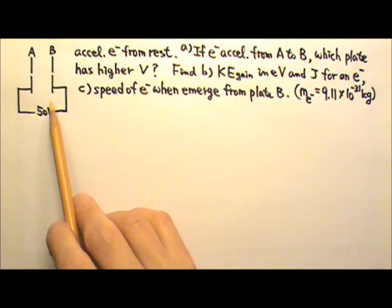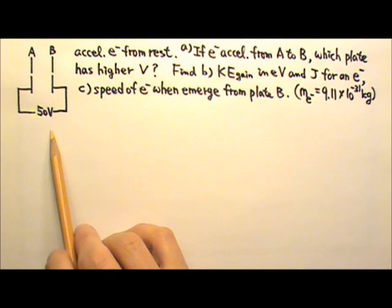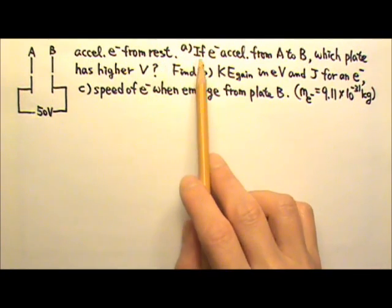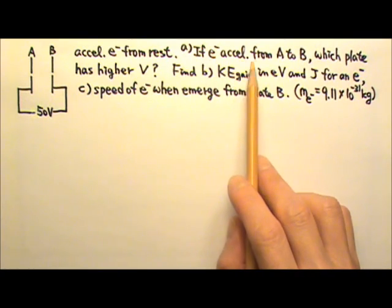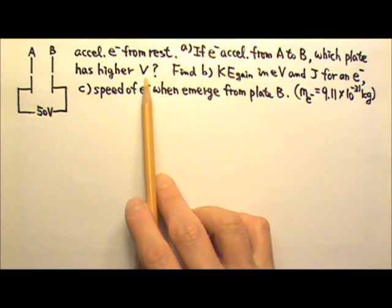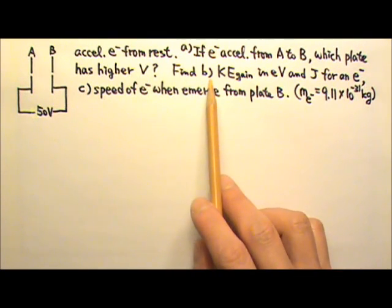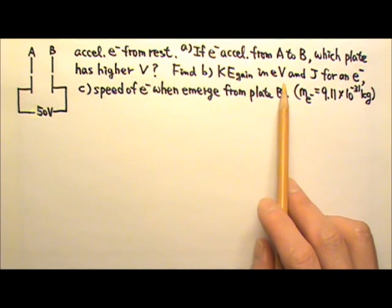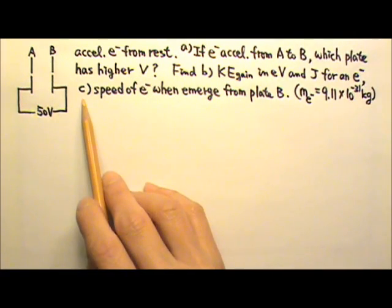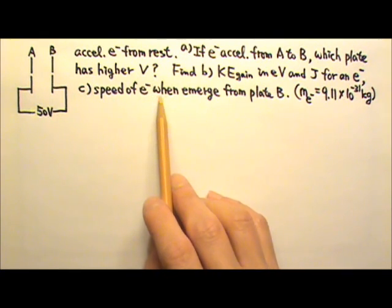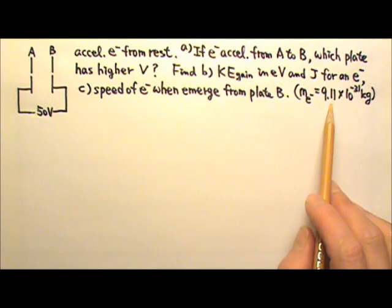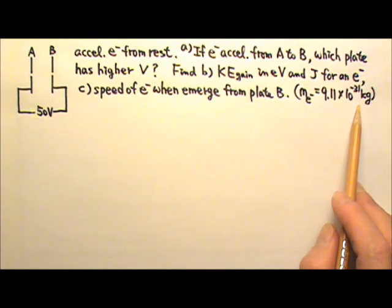Two parallel plates connected to a 50-volt power supply are used to accelerate electrons from rest. If the electrons accelerate from plate A to plate B, which plate has a higher electric potential? Find B, the kinetic energy gain in electron volts and in joules for an electron. And C, the speed of an electron when it emerges from plate B. The mass of an electron is 9.11 times 10 to the negative 31 kilograms.